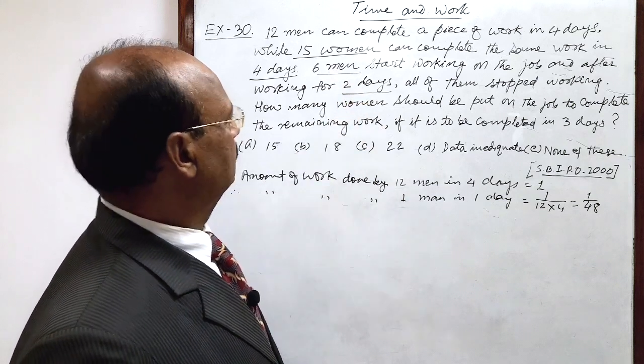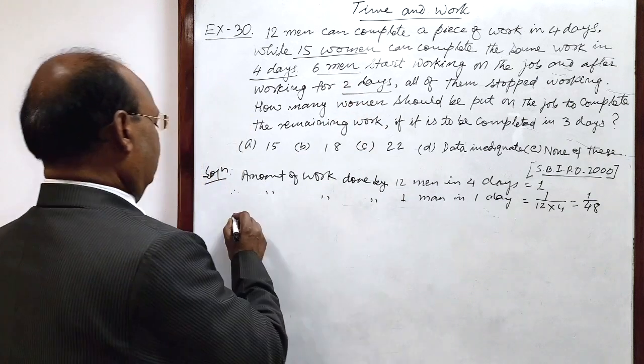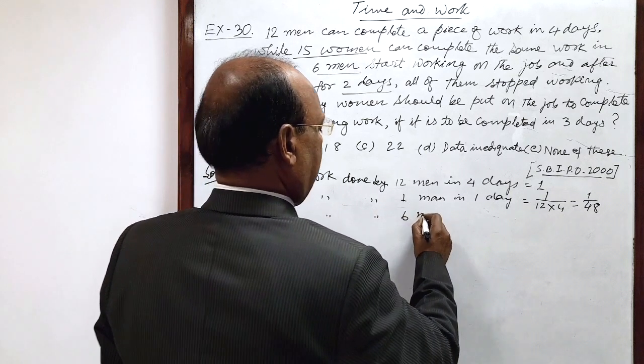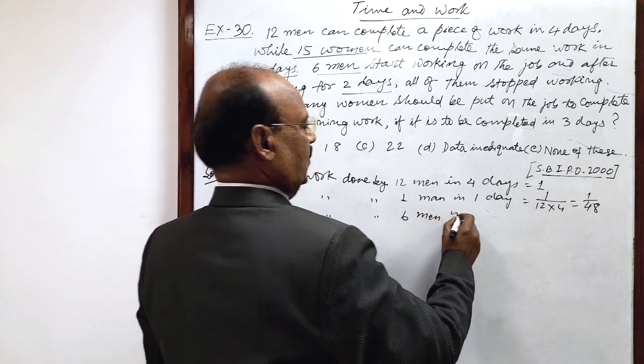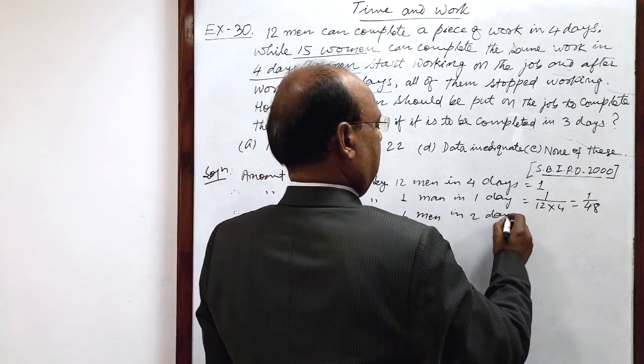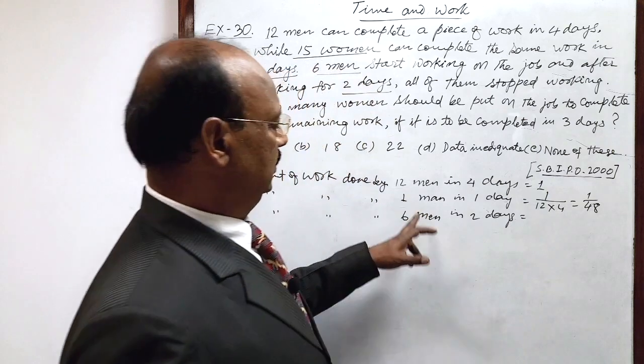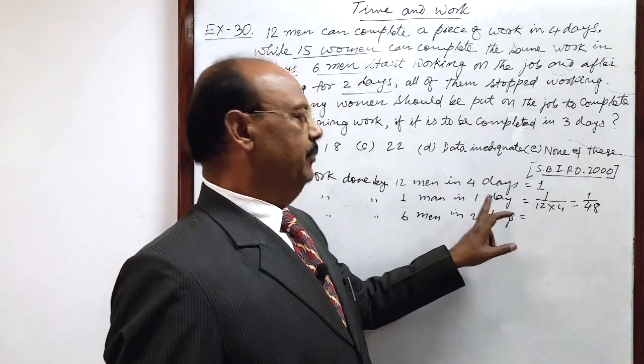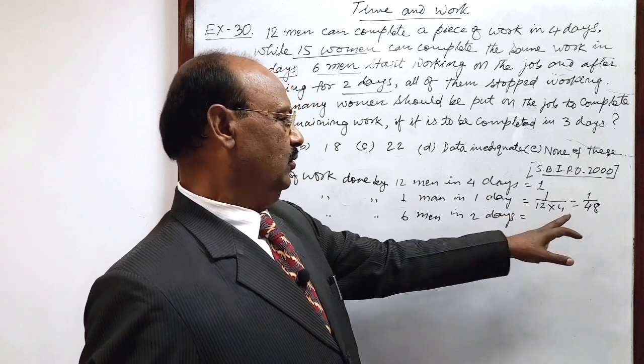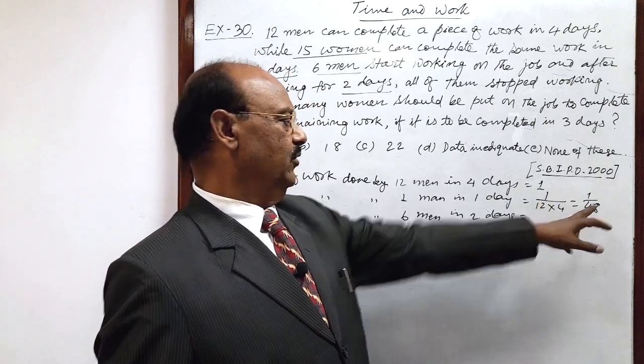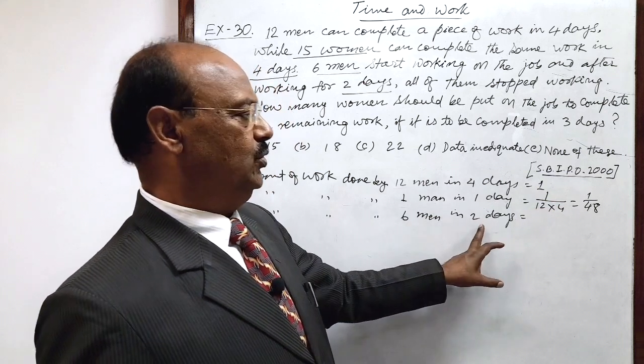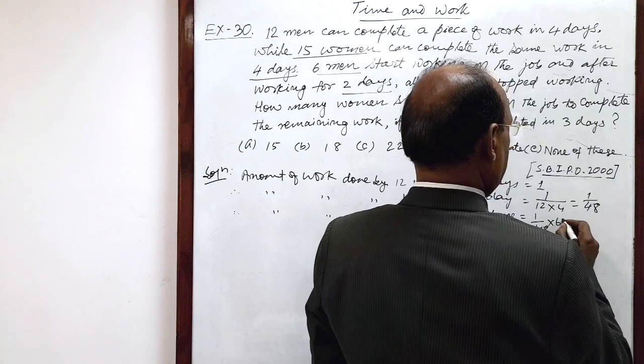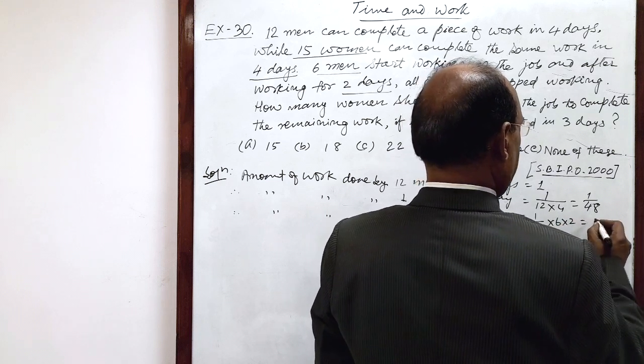We know if the number of men is more, work done will be more. If the number of days is more, work done will be more. So we multiply 1 by 48 by 6 and 2: 1 by 48 into 6 into 2, which equals 1 by 4.